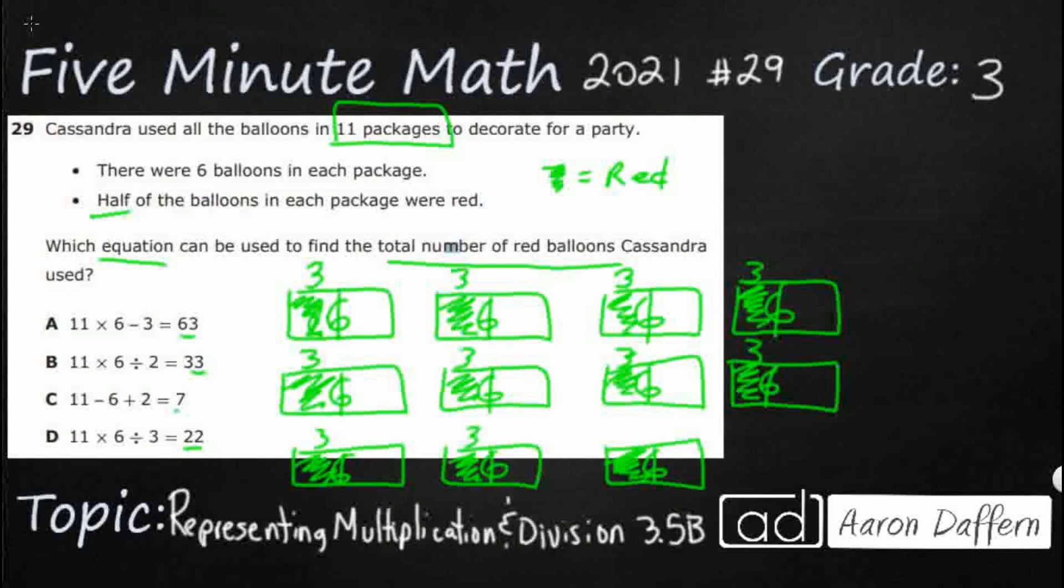Because even though we have 11 groups of six, we only want half of each of those. So it's actually going to be 11 groups of three. So three, six, nine, 12, 15, 18, 21, 24, 27, 30, 33.